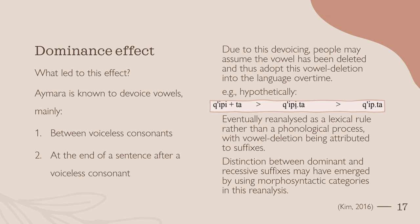This raises the question of what led to this dominance effect. One thing to note is that Aymara is known to devoice vowels. This mainly occurs in two contexts: when the vowel is between voiceless consonants, and when it is positioned after a voiceless consonant at the end of a sentence. Due to this devoicing, people may assume the vowel has been deleted, and thus adopt this perceived vowel deletion into the language over time. There is evidence for variation in whether a vowel is deleted or not in the oldest historical sources of Aymara, as early as the 1600s. The rules for vowel elision are not outlined, but this is clearly a long-running linguistic feature, allowing sufficient time for people to reanalyse it.